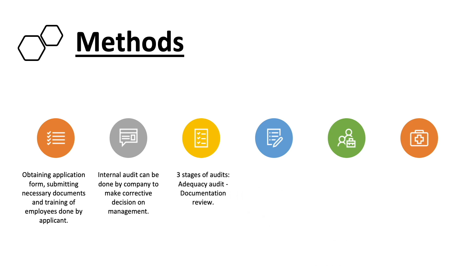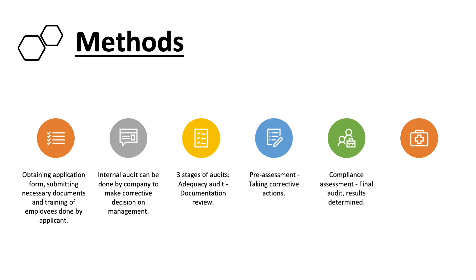The next steps are taken by the accreditation body. There are three stages of auditing: adequacy audit, pre-assessment, and compliance assessment. The adequacy audit is a document review to make sure the SAMM requirements are met. The pre-assessment is optional, where the applicant can request it to ensure the company is ready for the compliance assessment — this checks for non-conformities and implements corrective actions. The final audit, the compliance assessment, assesses whether the applicant can competently perform its tasks, evaluated against Standards Malaysia Accreditation Criteria.